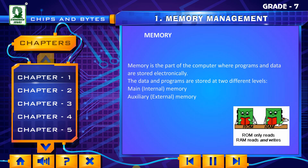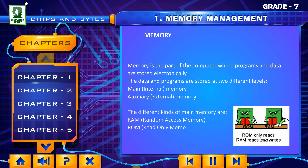The different kinds of main memory are RAM, random access memory, and ROM, read-only memory. ROM only reads, while RAM reads and writes.